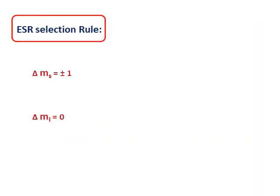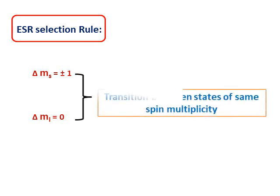The ESR selection rules are: ΔMS = ±1 and ΔMI = 0. Transitions occur between states of the same multiplicity.